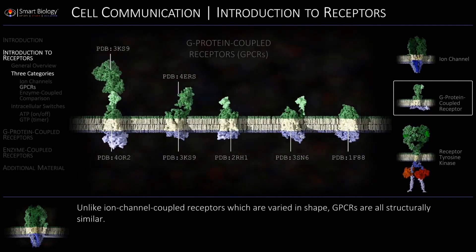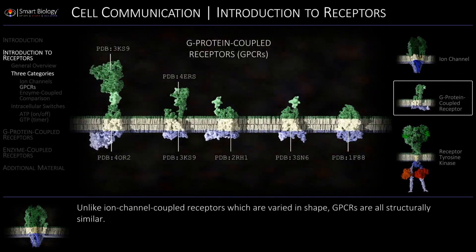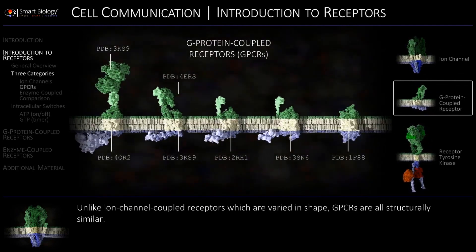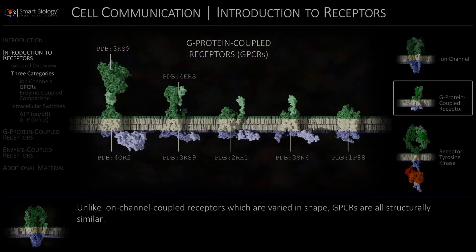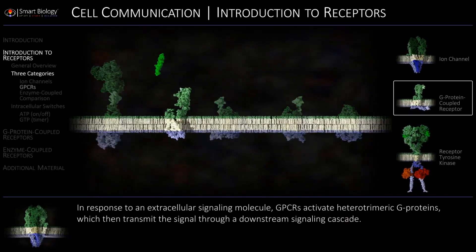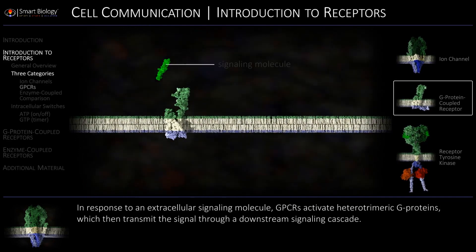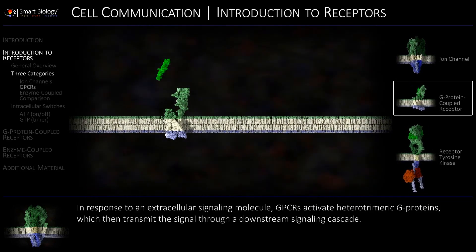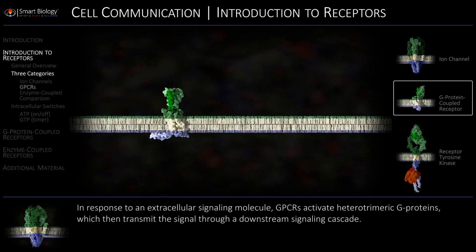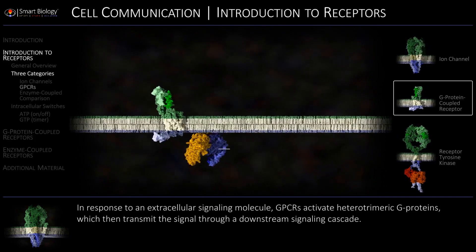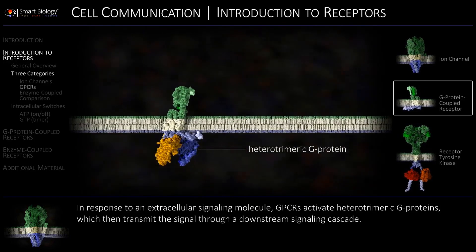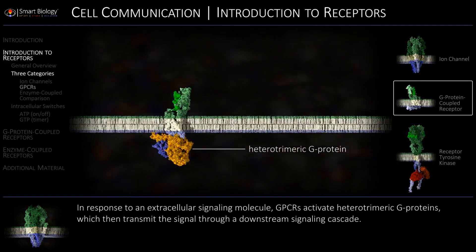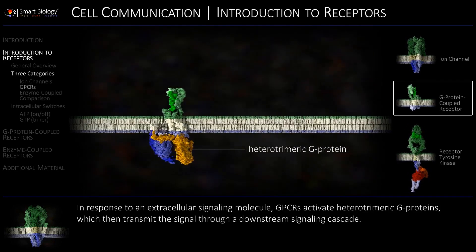Unlike ion-channel coupled receptors, which are varied in shape, GPCRs are all structurally similar. In response to an extracellular signaling molecule, GPCRs activate heterotrimeric G-proteins, which then transmit the signal through a downstream signaling cascade.